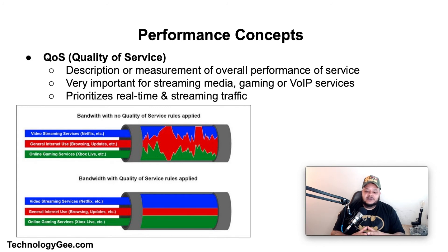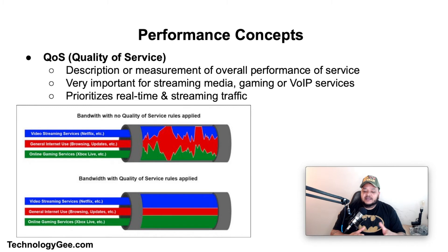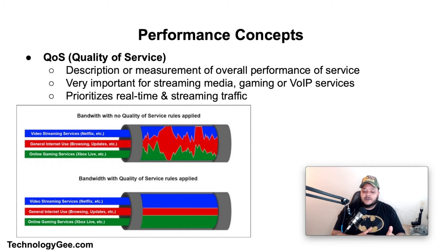Quality of Service (QoS) is the description or measurement of the overall performance of a service — such as telephony, computer network, or cloud computing — particularly the performance seen by users. QoS is very important for streaming media, gaming, or VoIP services, as it prioritizes real-time and streaming traffic. Depending on the router, QoS can simply be turned on and off, or tweaked by specifying services to prioritize, whether to optimize for gaming, and uplink/downlink speeds. QoS can also be configured by an ISP, and if so, changes made on your router will not improve your traffic.